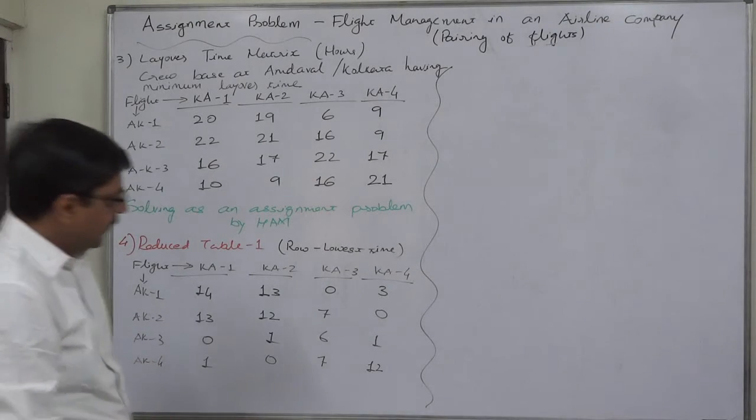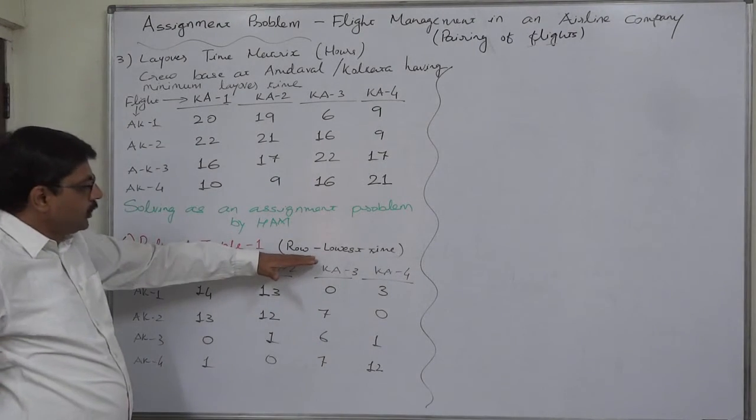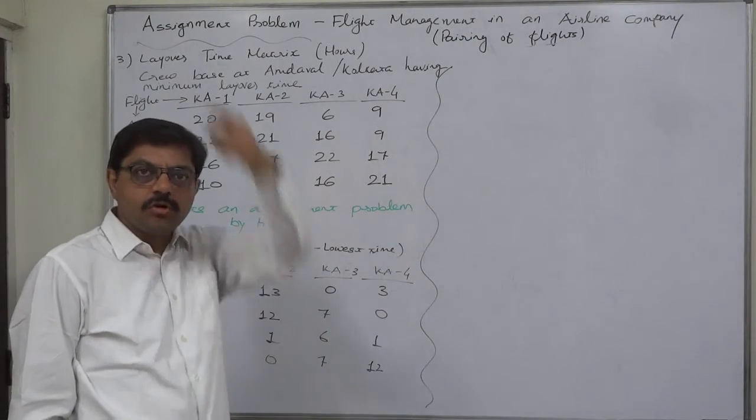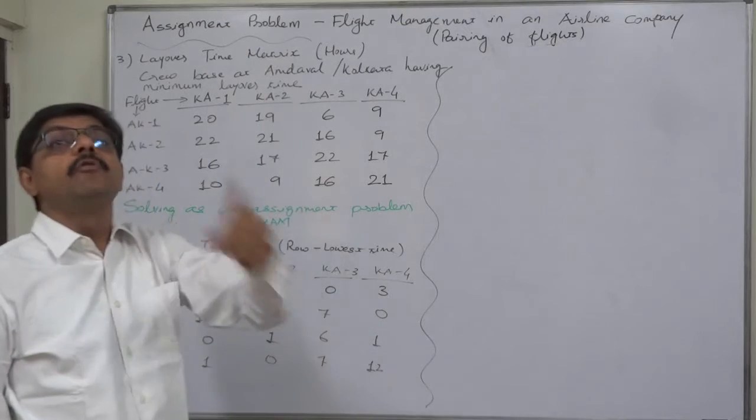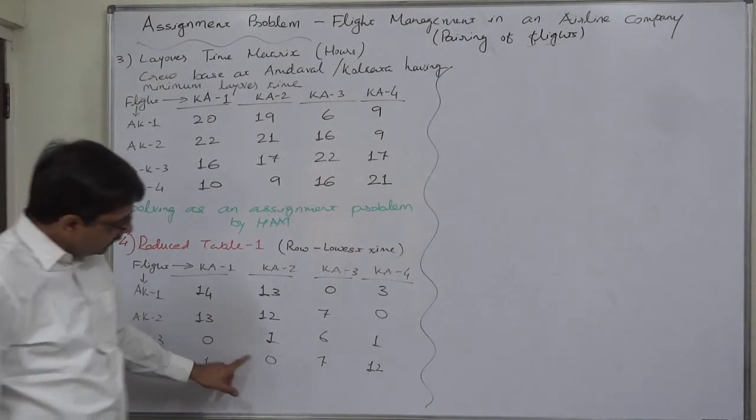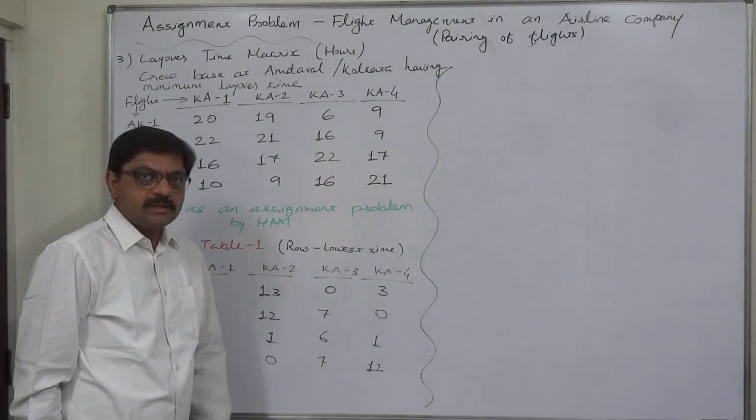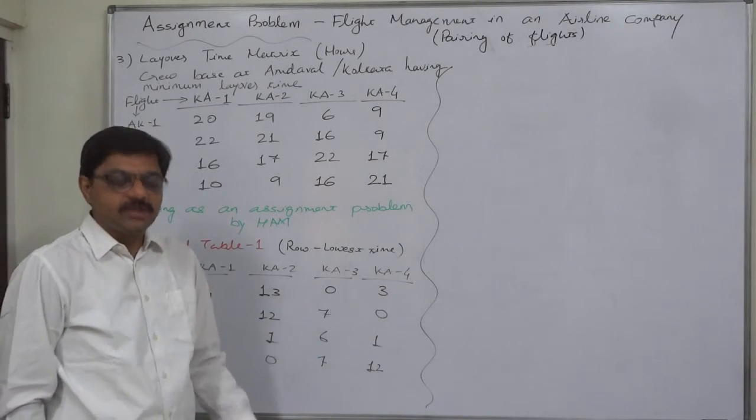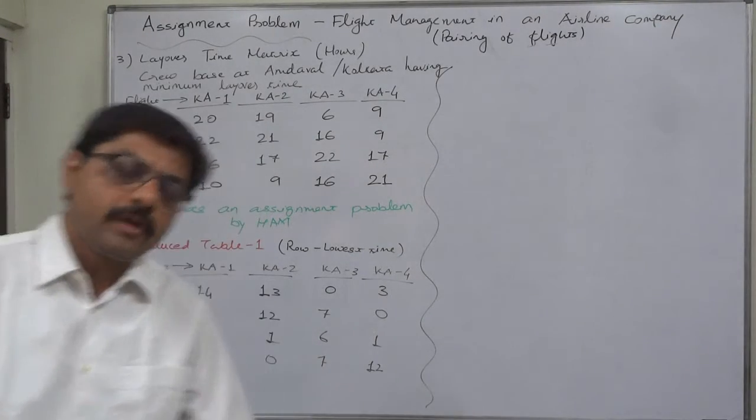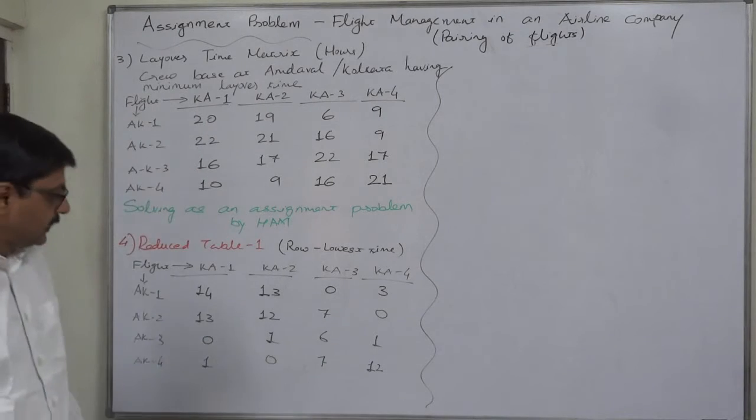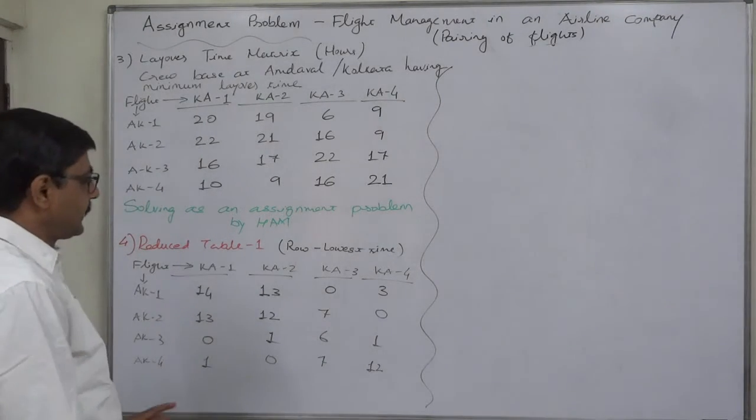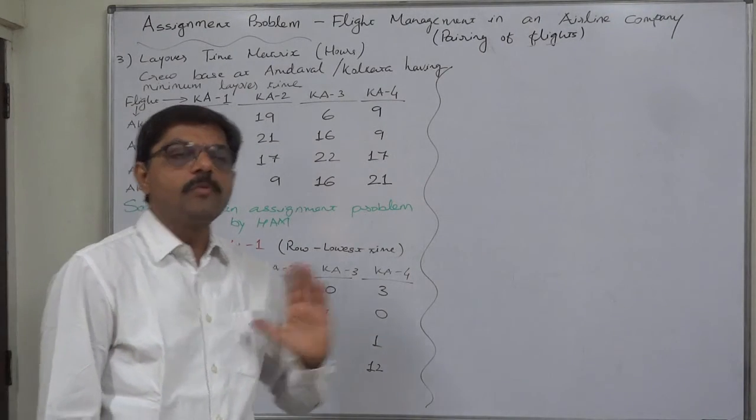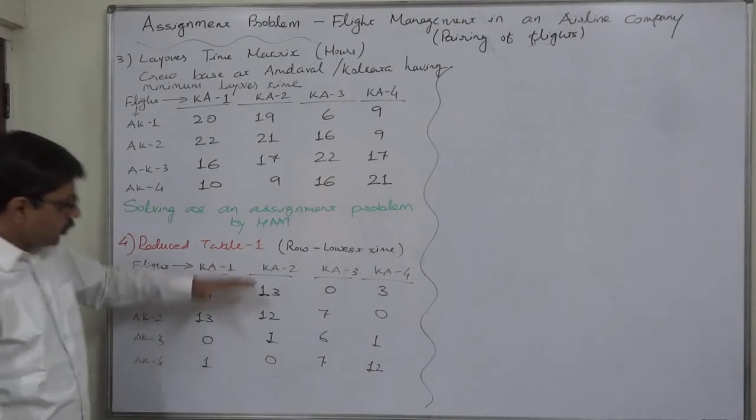Now after subtracting the lowest value from each and every row, check whether there is at least one 0 in each and every column. First column yes, second column yes, third column yes, fourth column yes. That means now we have at least one 0 in each row and each column. That means we can go for trial of assignments, and to make assignments we always go from row to column from top to bottom.